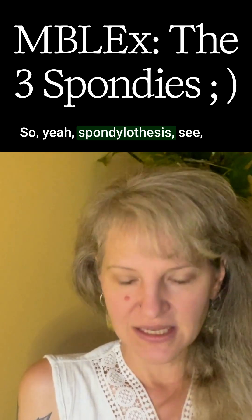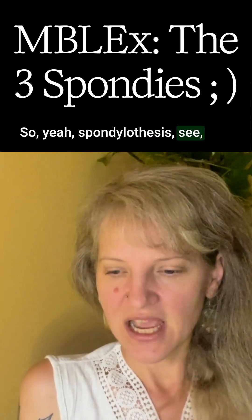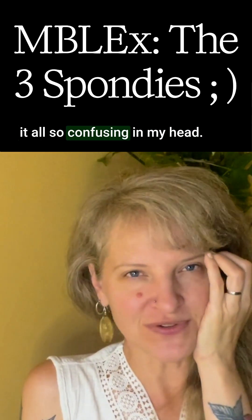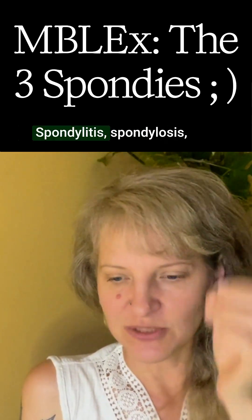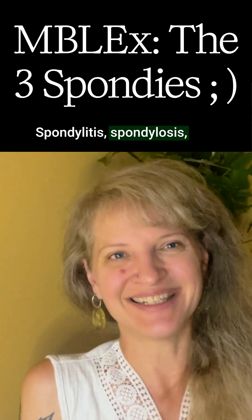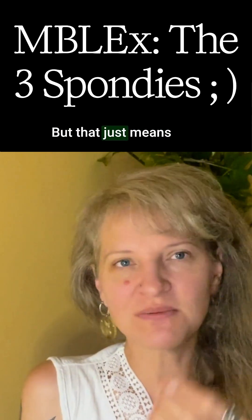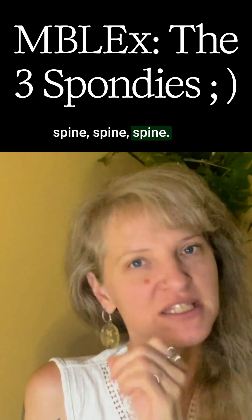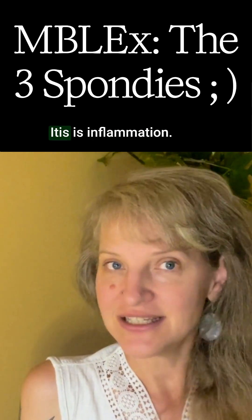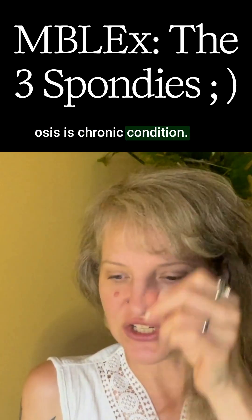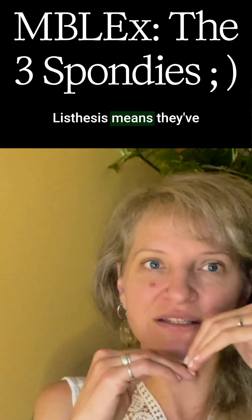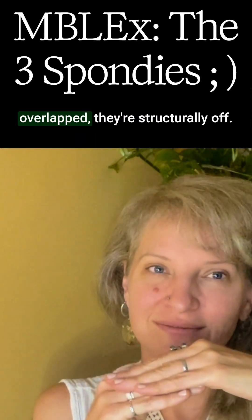Spondylolisthesis — the 'spondy' part is what makes it all confusing. Spondylitis, spondylosis, spondylolisthesis — they all just mean spine. 'Itis' is inflammation, 'osis' is chronic condition, and 'listhesis' means they've overlapped — they're structurally off.